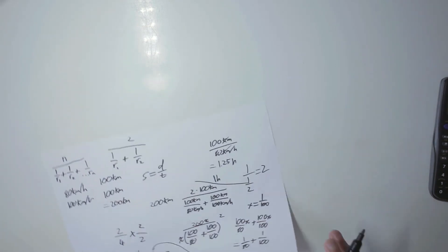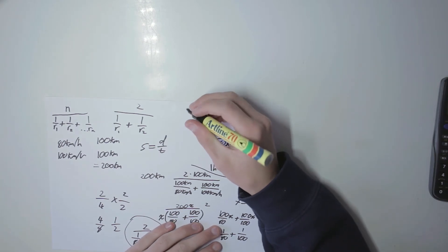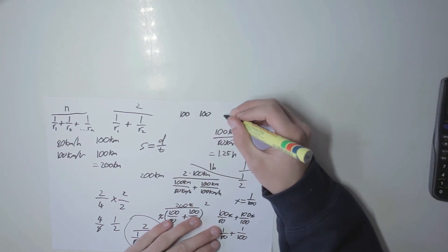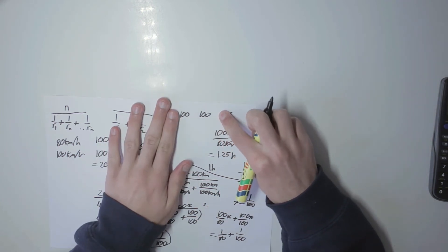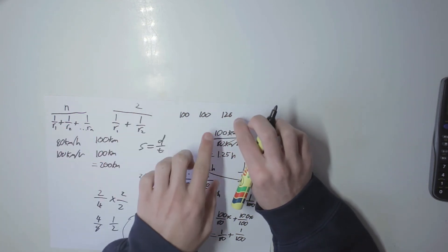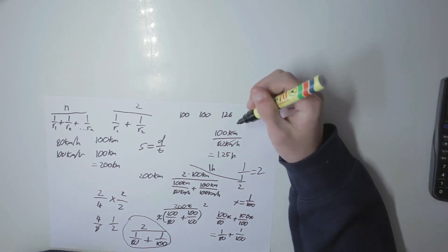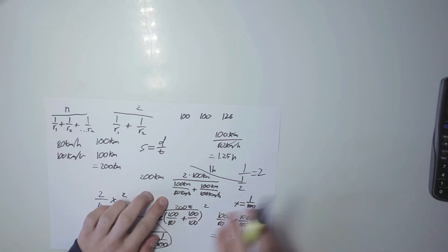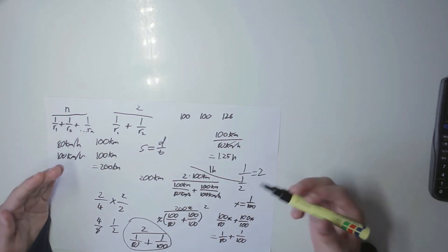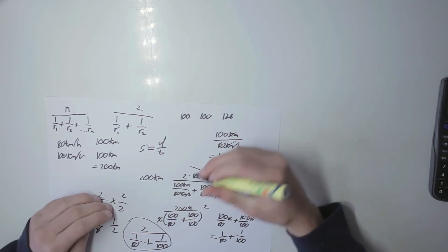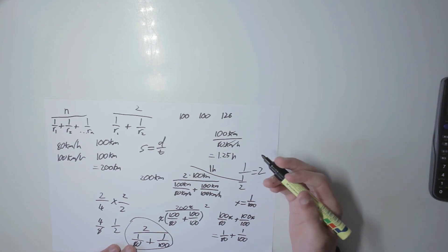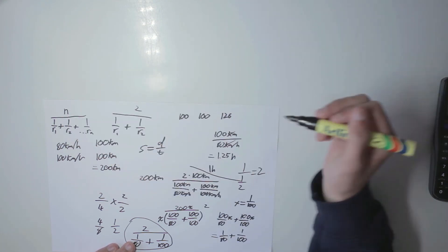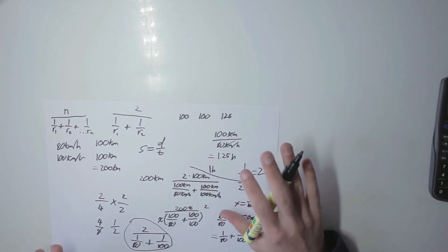A quick disclaimer: to use this formula the distances must be equal. If you're traveling 100 kilometers, then another 100 kilometers, then 126 kilometers, you can find the average speed for the first two, but you cannot use the harmonic mean formula as-is if you include the 126 kilometers. However, you can adjust it — during the derivation you have an intermediate step where instead of reciprocals you use distance divided by rate for each segment.